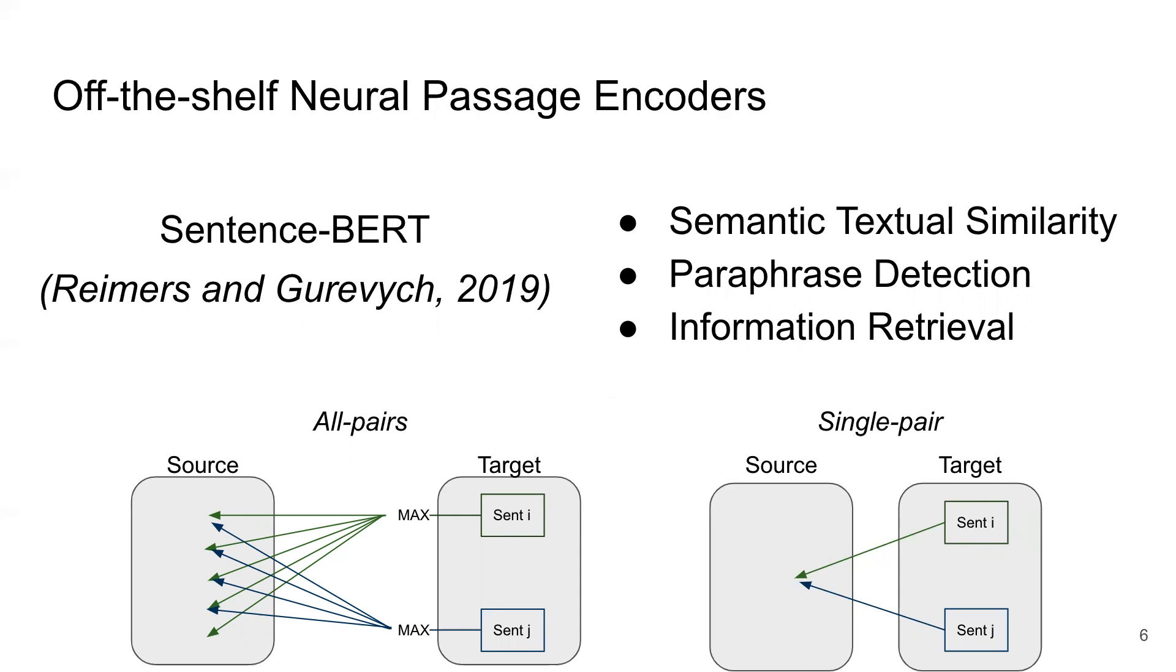We test them in the same all-pair and single-pair settings, so you compute an embedding for a source document or a source sentence, compute an embedding for all the target sentences, and then compare their cosine similarities, and that's how you make a prediction for each target sentence.